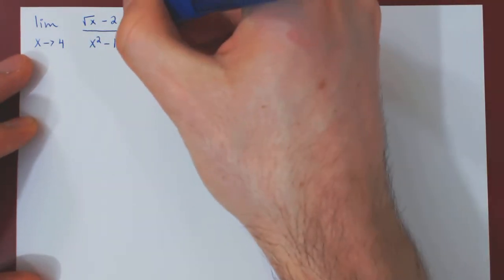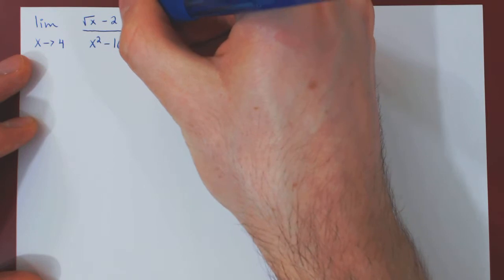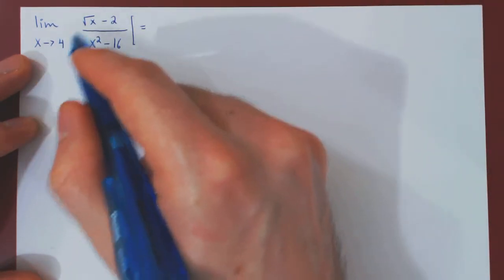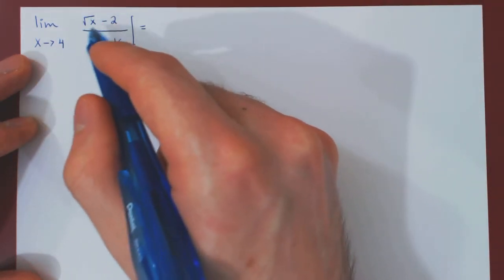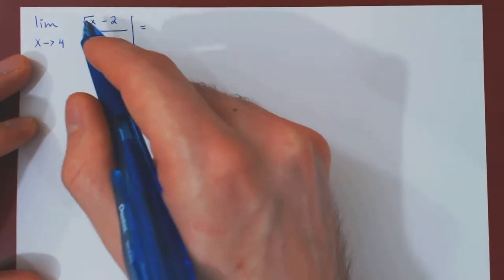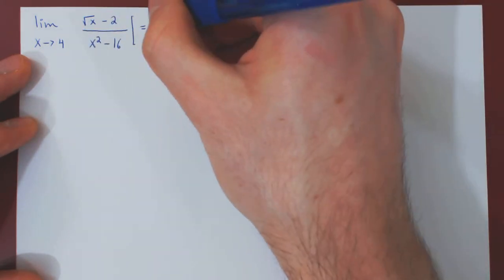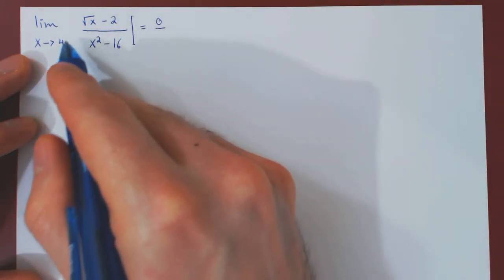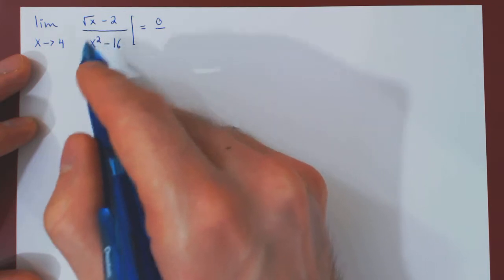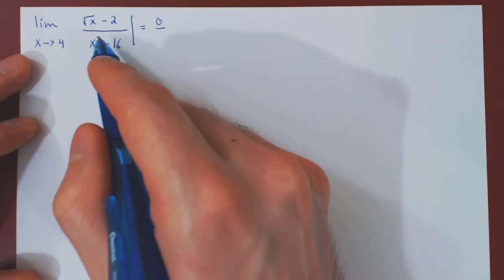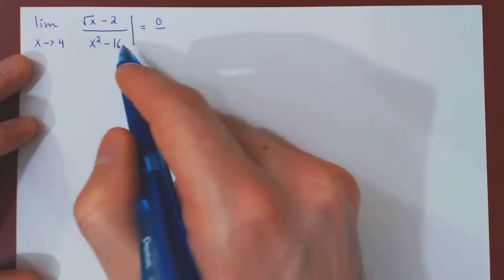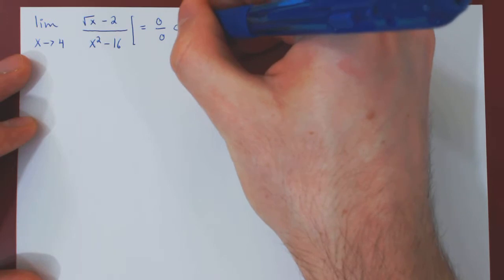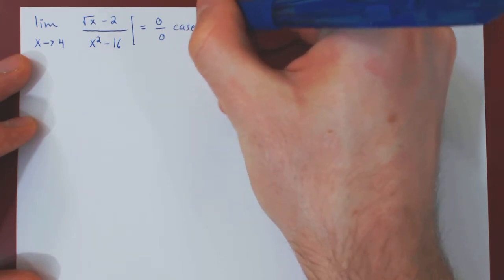Let us check what kind of case we're dealing with. As x approaches 4, root of x will approach root of 4, which is 2 — minus 2 is 0. As x approaches 4, x squared will approach 16 — minus 16 is equal to 0. So we have a 0 over 0 case.